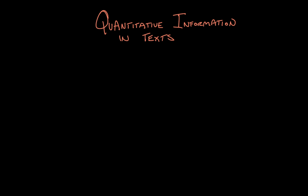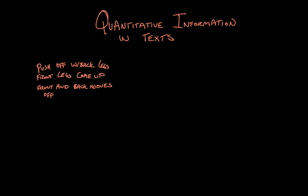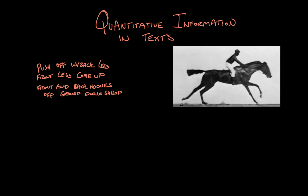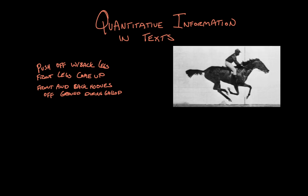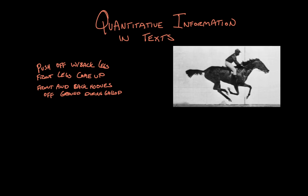I guess I could just use words, right? The horse pushes off with its back legs and then its front legs come up, and as the horse propels itself forward, both its back and front hooves are off the ground at the same time as it gallops — it's like a series of jumps. Listening to myself say that, it doesn't feel very clear. It's certainly less clear than a moving image of a galloping horse. Sometimes the most efficient way to express information is to present it visually, to see it in order to best understand it.